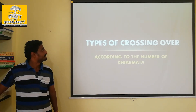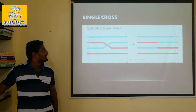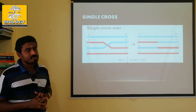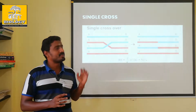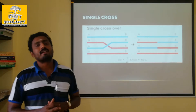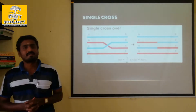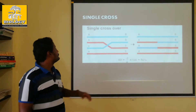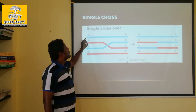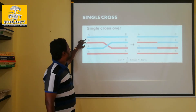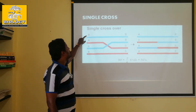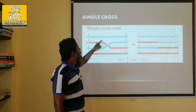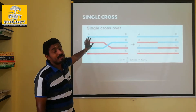Types of crossing over. This is a single crossing over — these are different types. These are all from state board books, diagrams from the state board botany book and 12th standard books. This is a set of chromosomes: A, B and A and B. We will talk about chromatid.